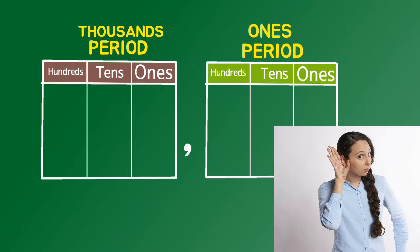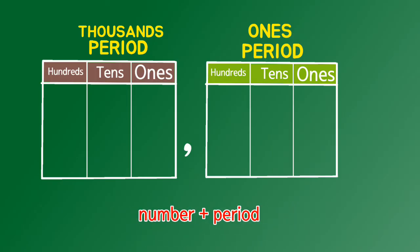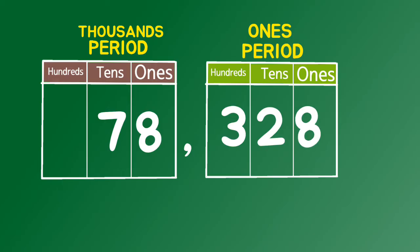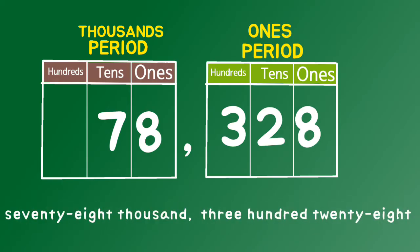Seventy eight thousand, three hundred twenty eight. Seventy eight thousand, three hundred twenty eight. 78,328 in symbols and in words. Notice something?